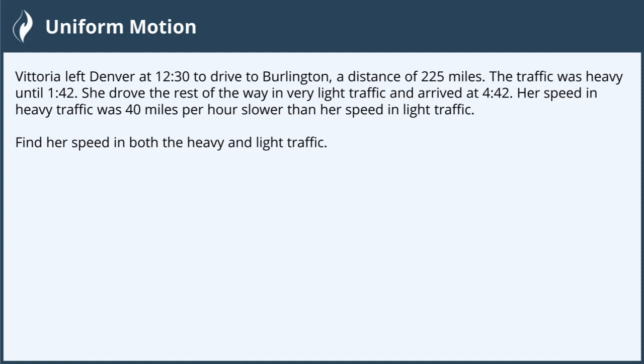In this video, we're going to solve a uniform motion problem. Victoria left Denver at 12:30 to drive to Burlington, a distance of 225 miles. The traffic was heavy until 1:42. She drove the rest of the way in very light traffic and arrived at 4:42. Her speed in heavy traffic was 40 miles per hour slower than her speed in light traffic. We want to find her speed in both traffics.